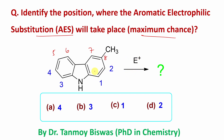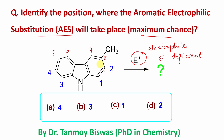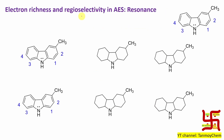In order to understand the position of aromatic electrophilic substitution, you need to understand that it involves a molecule called an electrophile, which is an electron-deficient molecule. Since it is electron deficient, it will preferentially react at an electron-rich position. So whichever position is maximum electron-rich will decide the regioselectivity, and that answer can be obtained from the resonance structures.